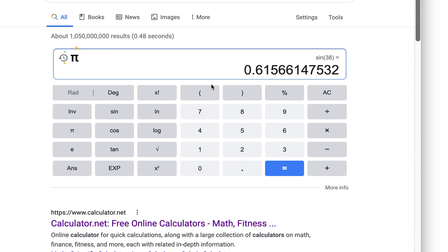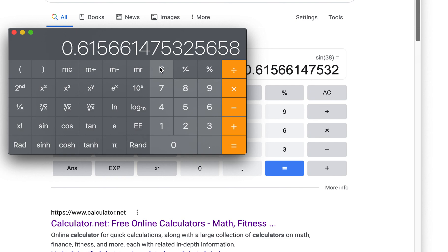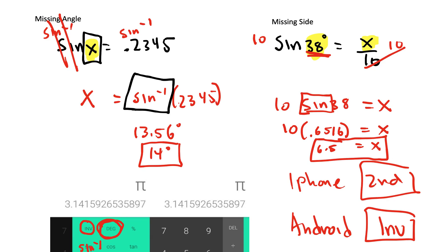So on this Android calculator, you actually push the word sine first or cosine or tangent, then you enter the decimal. On the iPhone, you would put the 38 degrees first, then click the sine afterwards. So there is a small difference. Hopefully that helps to clarify a little bit for us.